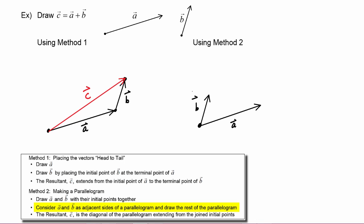The next step says to consider vector A and vector B as the adjacent sides of a parallelogram and draw the rest of it using dotted lines. Since opposite sides of a parallelogram are parallel, we draw a dotted line parallel to vector A and the same length, then another dotted line parallel to vector B and the same length. Now we have created a parallelogram.